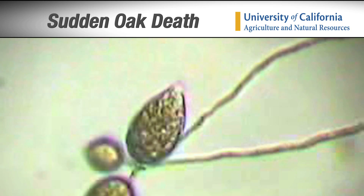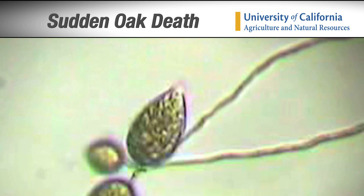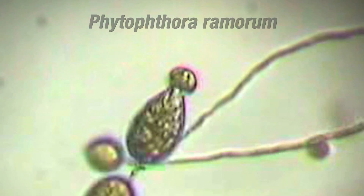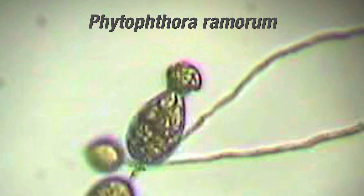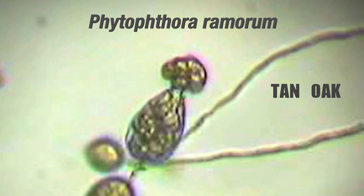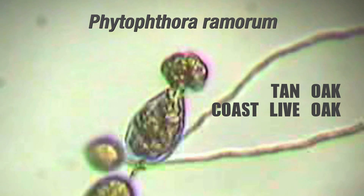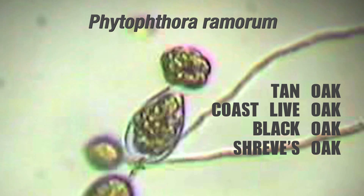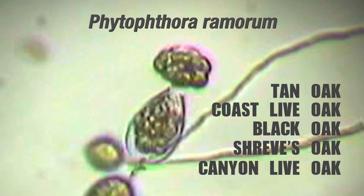The sudden oak death pathogen is called Phytophthora ramorum, and it kills five trees in our forests: tan oak, coast live oak, black oak, Shreve's oak, and canyon oak.